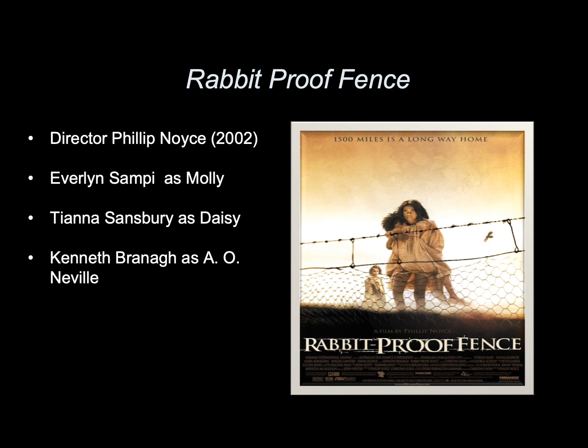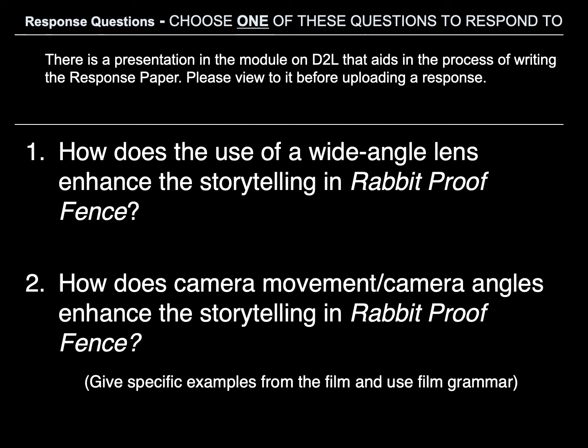This week's film is Rabbit Proof Fence, directed by Philip Noyce in 2002, starring Everlyn Sampy as Molly, Tiana Sandsbury as Daisy, and Kenneth Branagh as A.O. Neville. Response questions — choose one to respond to. There's a presentation in the module on D2L that aids in writing the response paper; please view it before uploading. Option one: how does the use of the wide-angle lens enhance the storytelling in Rabbit Proof Fence? Option two: how do camera movement and camera angles enhance the storytelling in Rabbit Proof Fence? Give specific examples from the film and use film grammar.